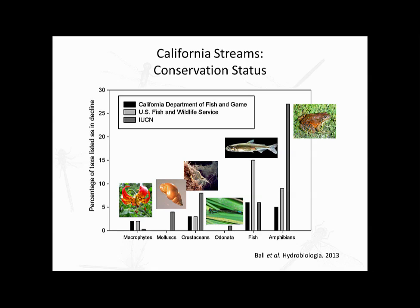Only 2% of the species on our list have been evaluated by state and federal listings. The IUCN red list includes some more groups, including mollusks and Odonates, which are not covered at all in the state and federal lists. There are no aquatic insects on these lists that actually provide legal protection for species. There is only one Odonate — an endemic damselfly, Ischnera gemina, found in the San Francisco Bay Area — listed as vulnerable on the IUCN red list.